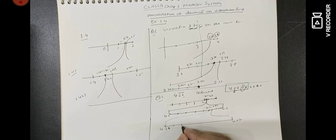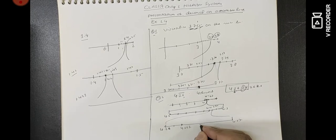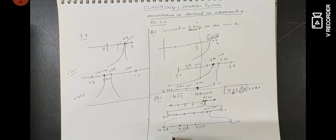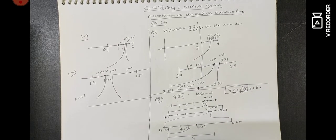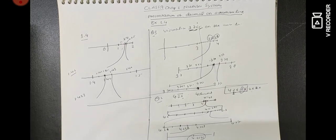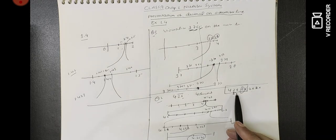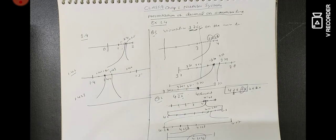Now we have the third decimal: divide between 4.26 and 4.27 into 10 parts — the 2nd part gives 4.262, the 3rd gives 4.263. Our number falls at the 6th part, giving us 4.2626. So this is our number: 4.2626 is shown at this point. For every decimal, we draw one more line, divide into 10 parts, and mark the required digit.